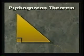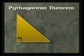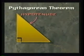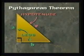First, we have some definitions. In a right triangle, the side that is opposite the right angle is called the hypotenuse. The other two sides are called the legs.